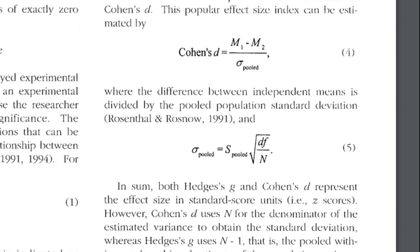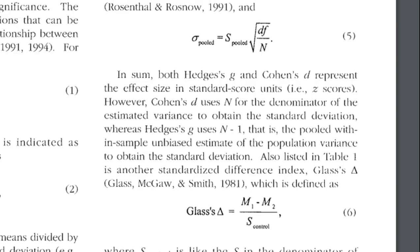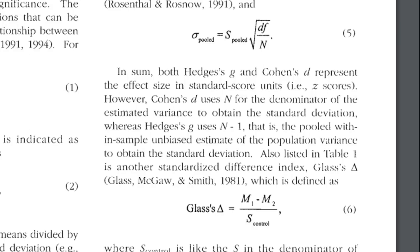And that's really the only difference between Hedges' g and Cohen's d. And arguably people should only ever be reporting Hedges' g because virtually nobody has access to the population standard deviation. All you have is access to the sample standard deviations.